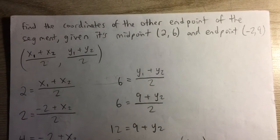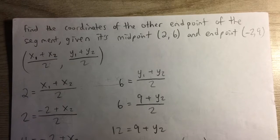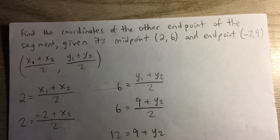Find the coordinates of the other endpoint of the segment given the midpoint (2, 6) and the endpoint (-2, 9).